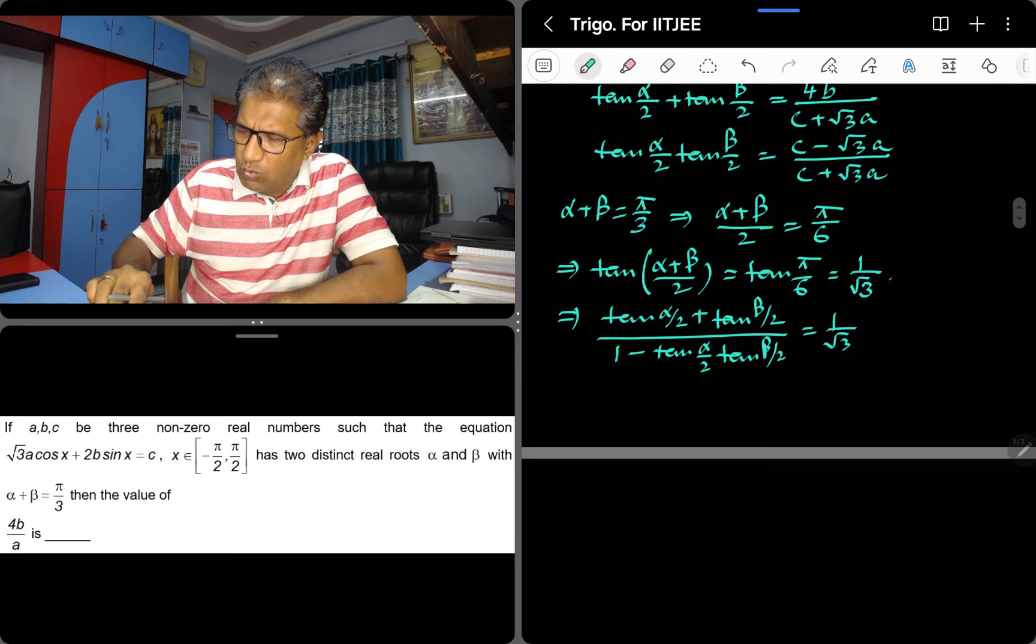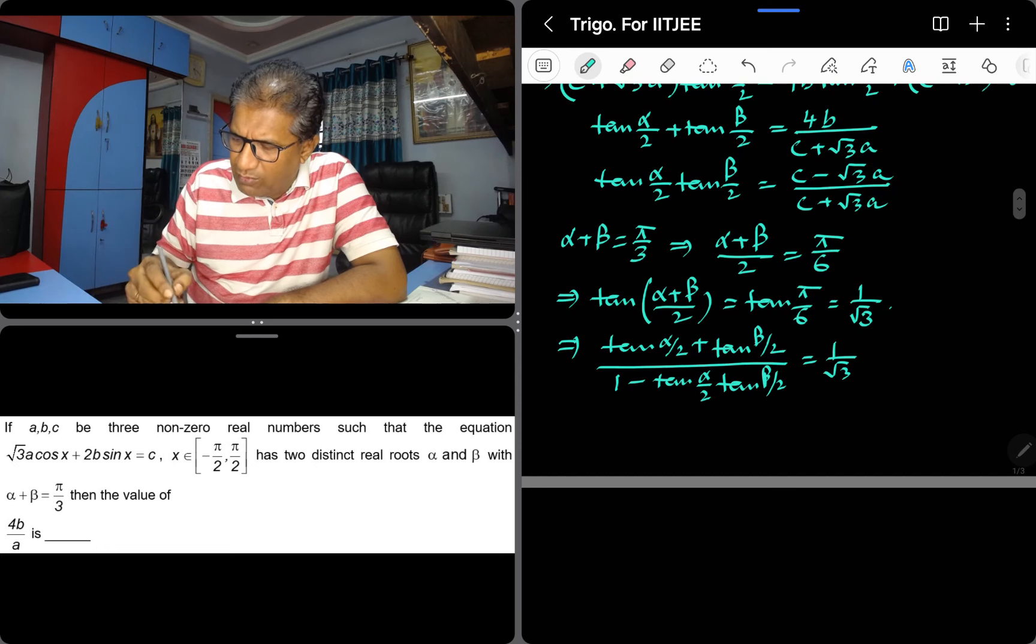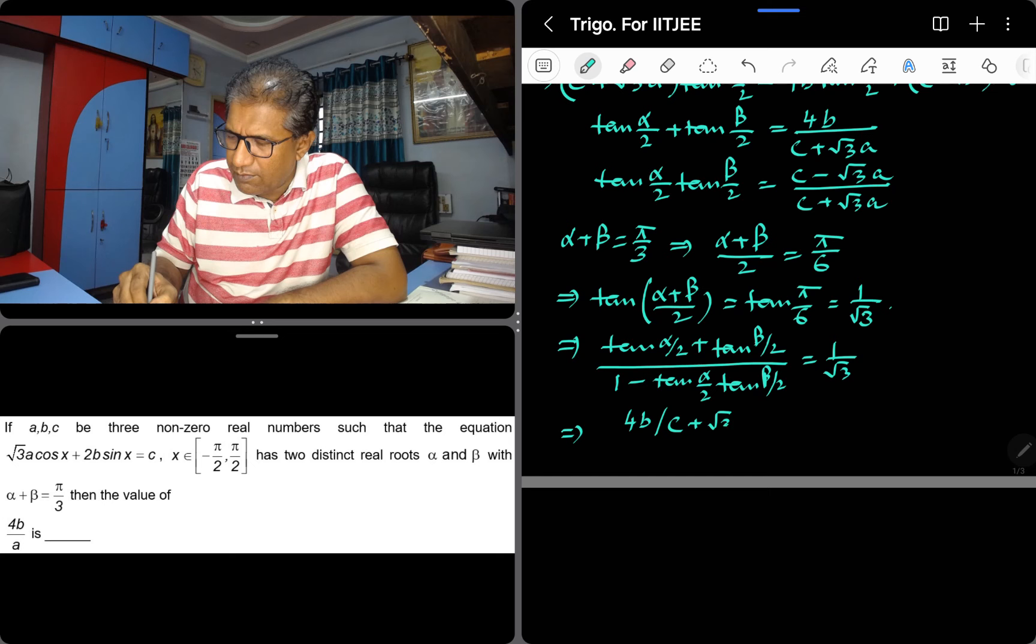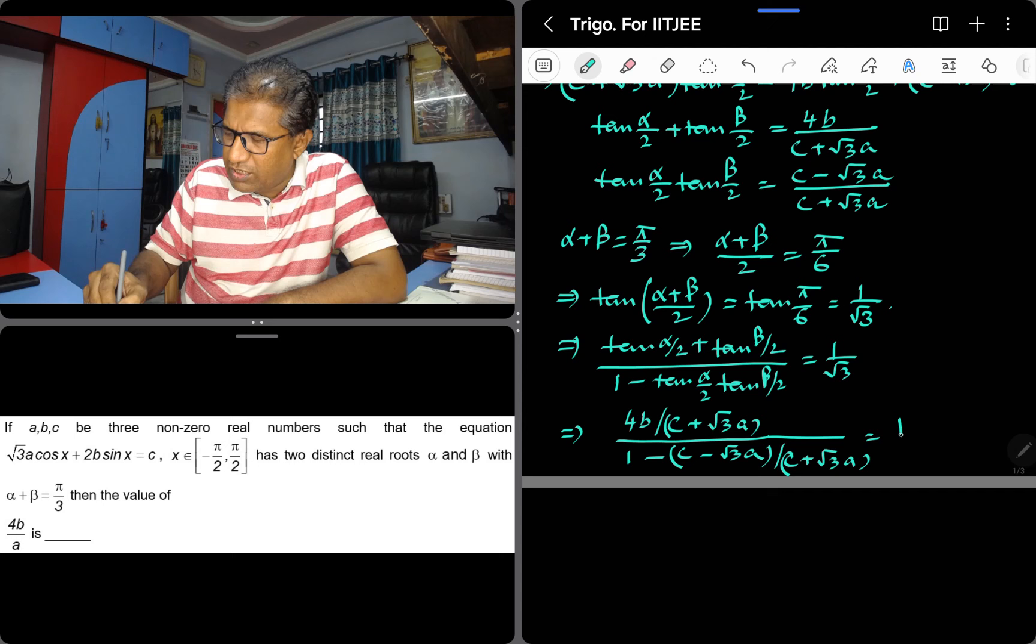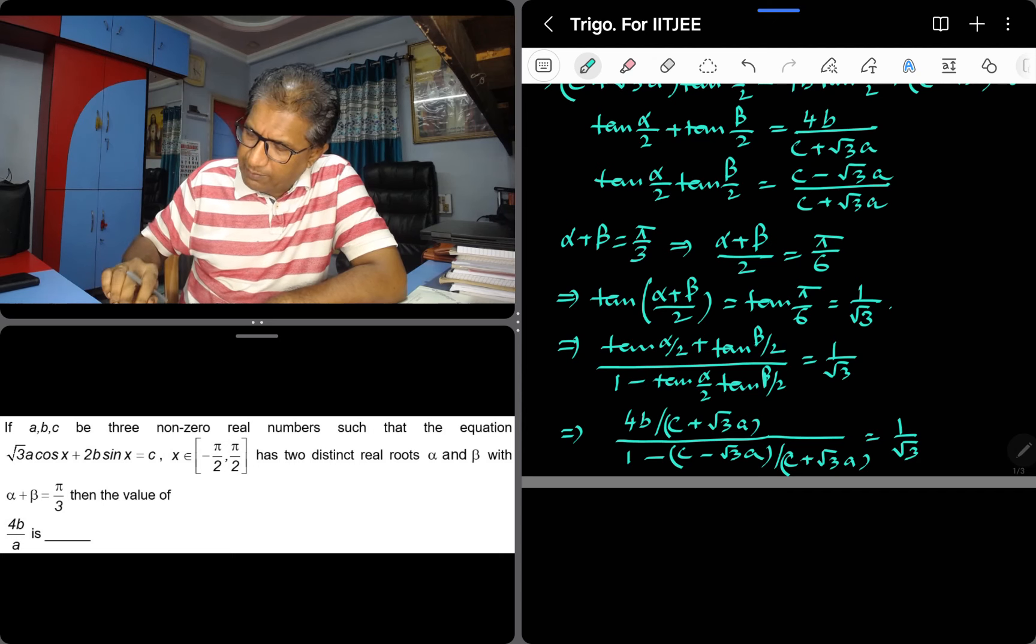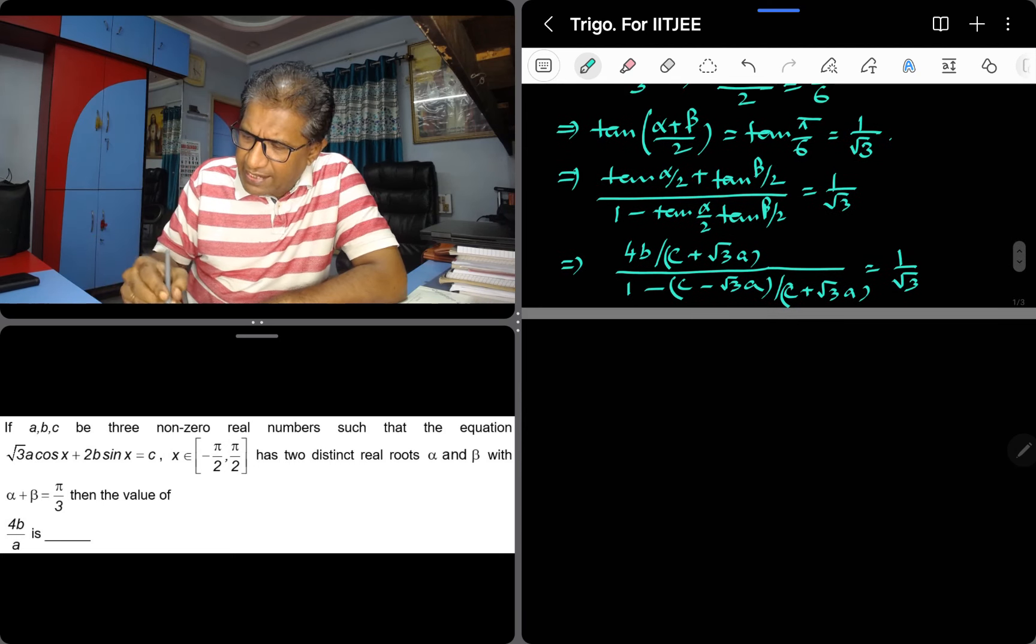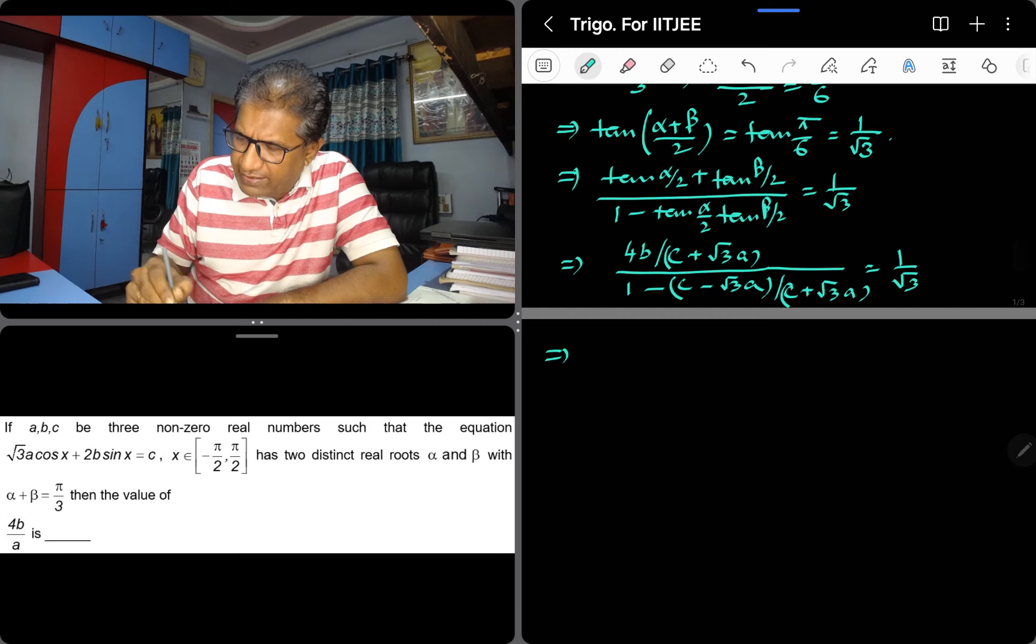Tan alpha by 2 plus tan beta by 2, we are putting this value, divided by 1 minus tan alpha by 2 times tan beta by 2, which equals 1 over root 3. Let's simplify the left hand side.